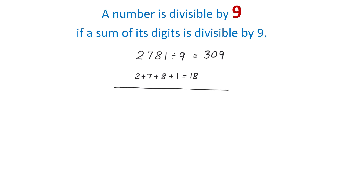Let's see another example. The number 117 is divisible by 9, and that is because if we add the digits 1, 1, and 7, we get 9, and 9 is divisible by 9. Therefore, 117 is also divisible by 9 and the result is 13.